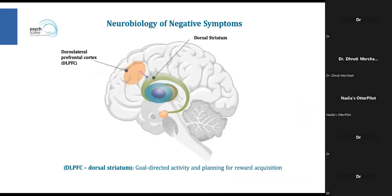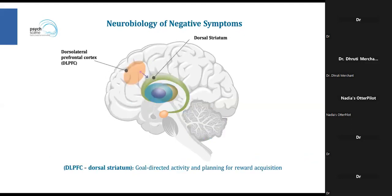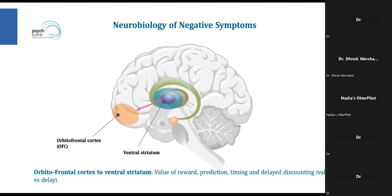The dorsolateral prefrontal to dorsal striatum circuit is primarily implicated in goal-directed activity and planning for reward acquisition. In simplest terms, over-activation would be seen in mania, while under-activation would be seen in negative symptoms and depressive symptoms. The ACC to ventral striatum circuit is involved in calculating the cost of obtaining rewards and monitoring effort—this is implicated in negative symptoms, primarily motivation. The orbitofrontal to ventral striatum circuit can be associated with compulsivity and is probably also seen in OC symptoms and part of negative symptoms.